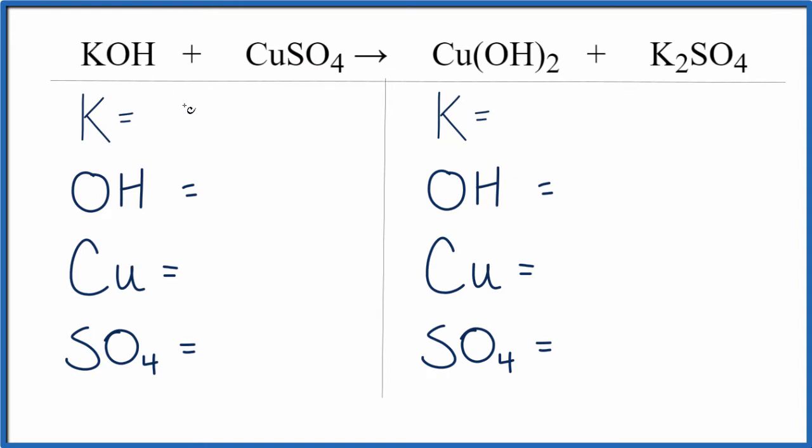On the reactant side, we have one potassium atom. And then since I have this hydroxide here, this OH here, and I see an OH over here, I'm just going to call the OH one item. So I have one OH. I have one copper.